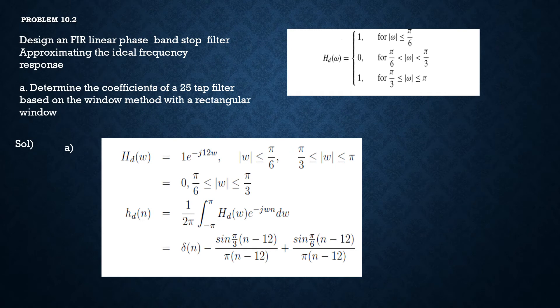Now, let's try to solve the problem. We want to design a band stop FIR filter by approximating the ideal frequency response. Frequency response of the filter will be hd of omega equal to 1 for mod omega less than or equal to pi by 6.